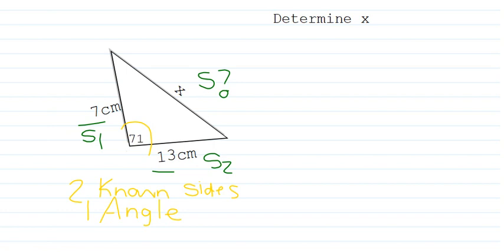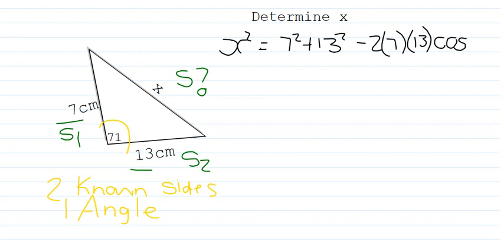Let's write my formula down. x squared equals the one side which is 7 squared plus the other side 13 squared minus 2 times that 7 and 13 cos of the included angle. Right now my included angle is 71 degrees, because that's the angle between the two sides that's given.